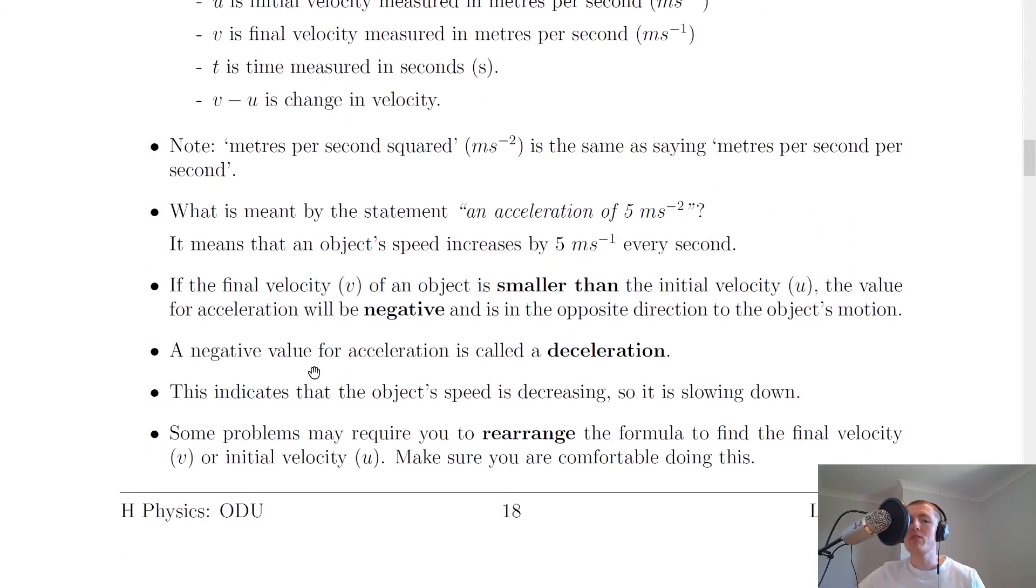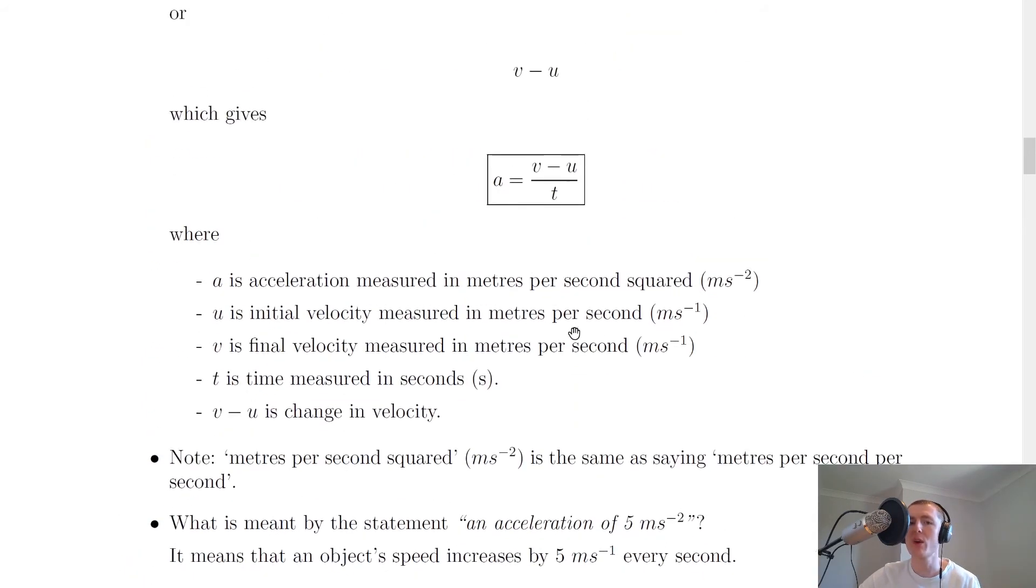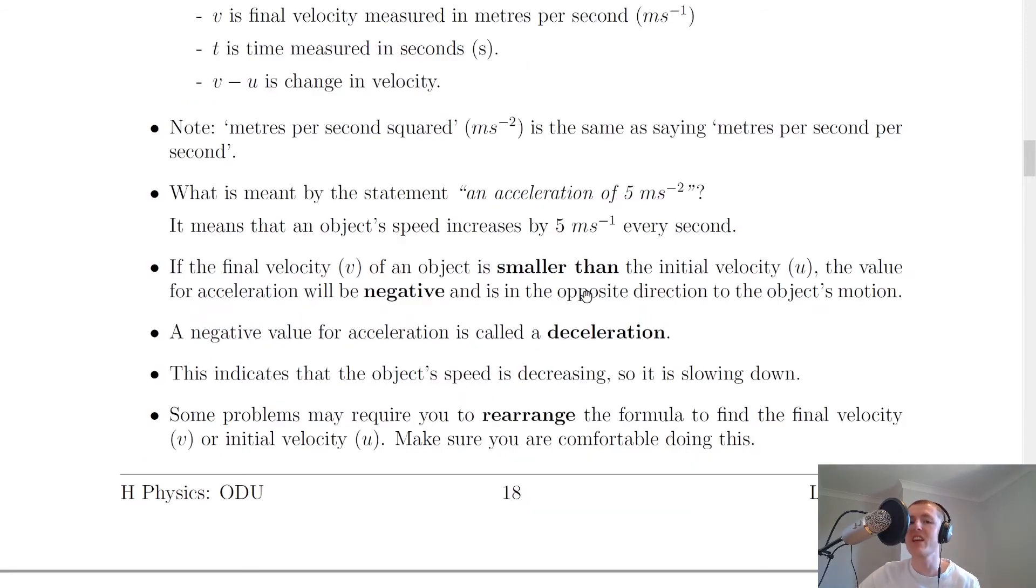You should remember from National 5 that if the final velocity of an object is smaller than the initial velocity, then the value for acceleration will be negative because if we look at this equation, we're saying that this u value will be bigger than the v value, so we'll be taking away a bigger number on the top, which will leave us with a negative answer overall. And this means that the acceleration is in the opposite direction to the object's motion. So what this negative value of acceleration means is a deceleration.